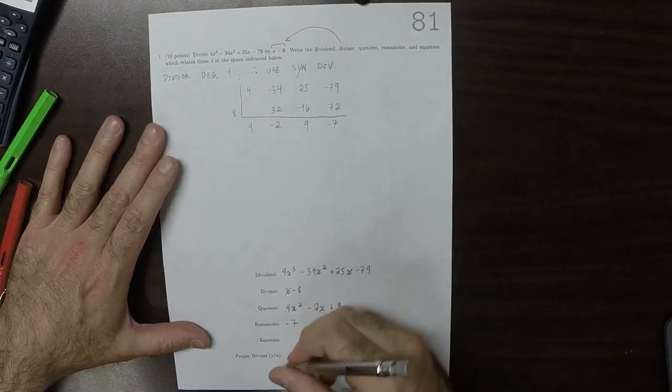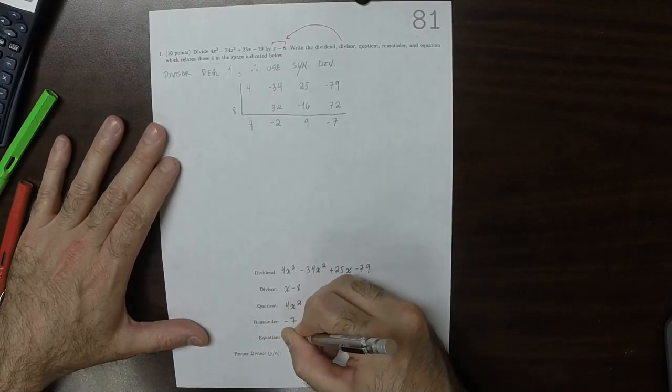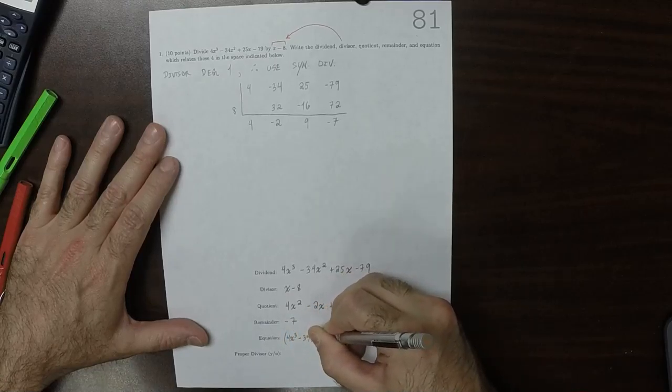The divisor is x minus 8. The quotient is 4x squared, minus 2x, plus 9. The remainder is negative 7.